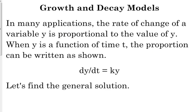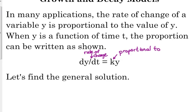So let's get into our application problems. In many applications, the rate of change of a variable y is proportional to the value of y. When y is a function of time t, the proportion can be written like this: dy over dt is equal to k times y. The rate of change of y, that's dy over dt, is proportional to, so that's where the k comes from, the value of y. So that's where that equation comes from. So let's find the general solution to this differential equation.